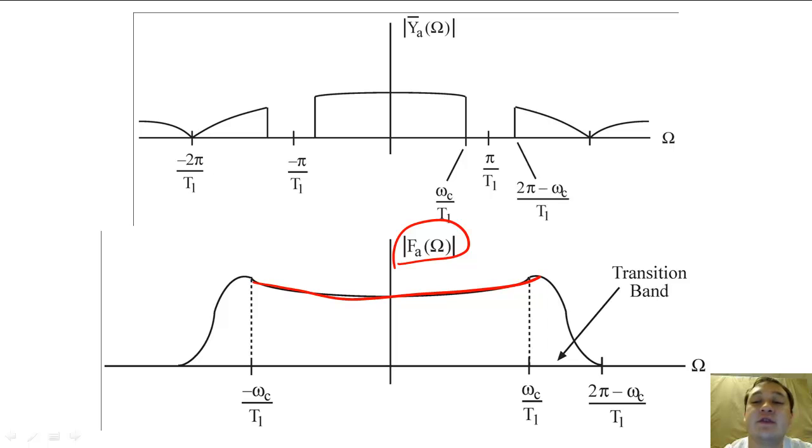In order for this D to A converter to work properly, the transition band of the filter must be very narrow. As the transition band becomes narrower, the analog filter will become more complicated and require more power.